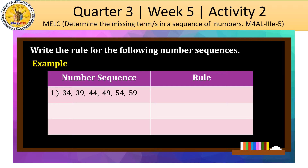We have 34, 39, 44, 49, 54, and 59. Look closely at the sequence. What is the pattern rule used here? The rule is addition by 5, because 34 plus 5 is equal to 39. 39 plus 5 is 44. 44 plus 5 is equal to 49. 49 plus 5 is equal to 54. And 54 plus 5 is equal to 59.